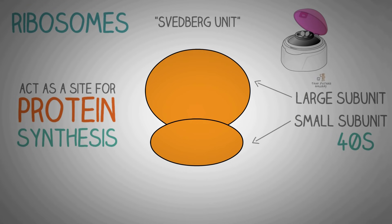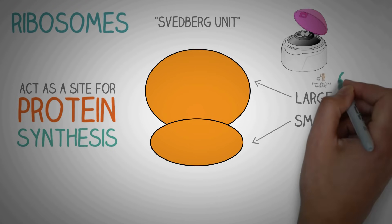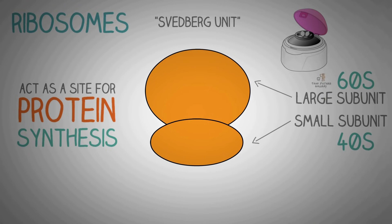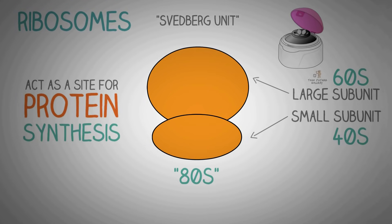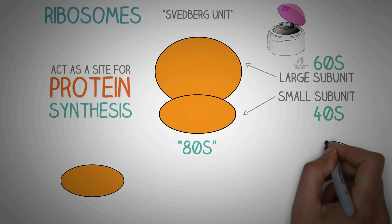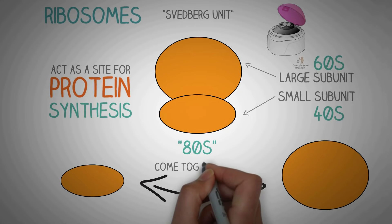In eukaryotic ribosomes, the smaller subunit is 40S and the larger subunit is 60S. When they join, they are denoted as 80S. These subunits lie separately in the cytoplasm until they need to come together for translation.